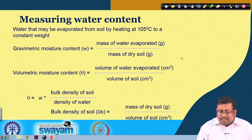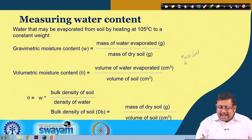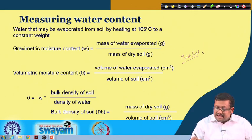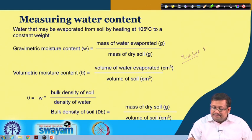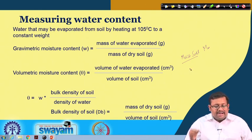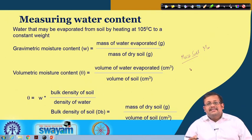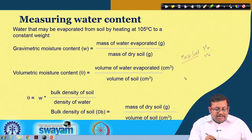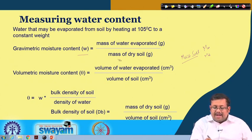We take some moist soil samples from the field and we dry that moist soil. We take the moist soil weight — let us assume that it is the mass of moist soil — then we dry the soil at 105 degrees centigrade overnight. As a result the water evaporates and we get the mass of dry soil. Gravimetric moisture content W can be expressed as mass of water evaporated in grams over mass of dry soil.